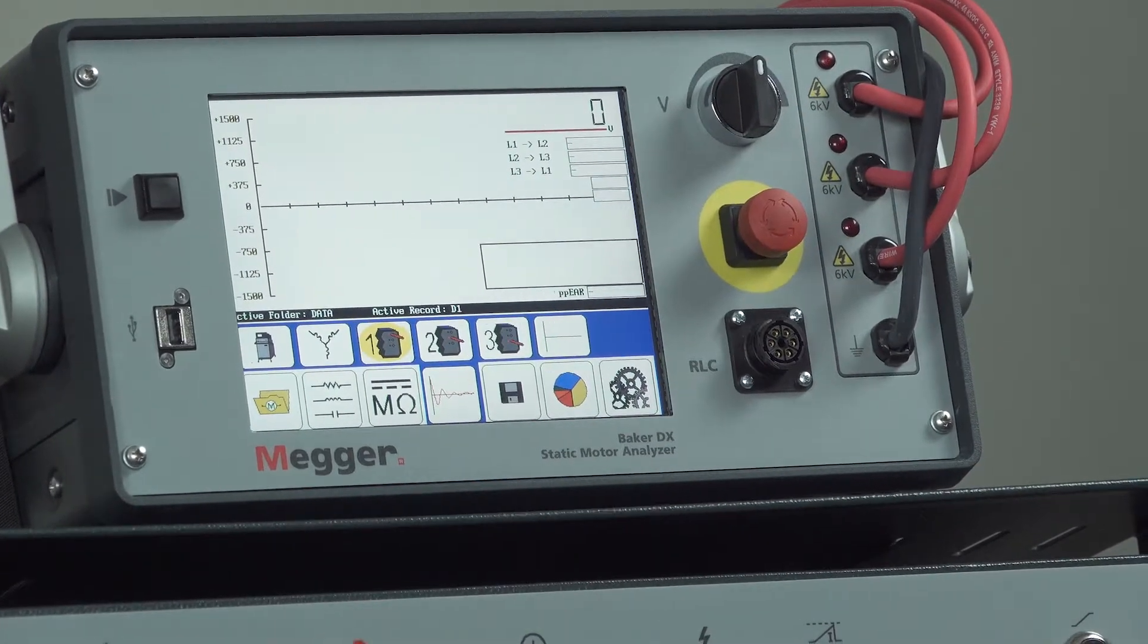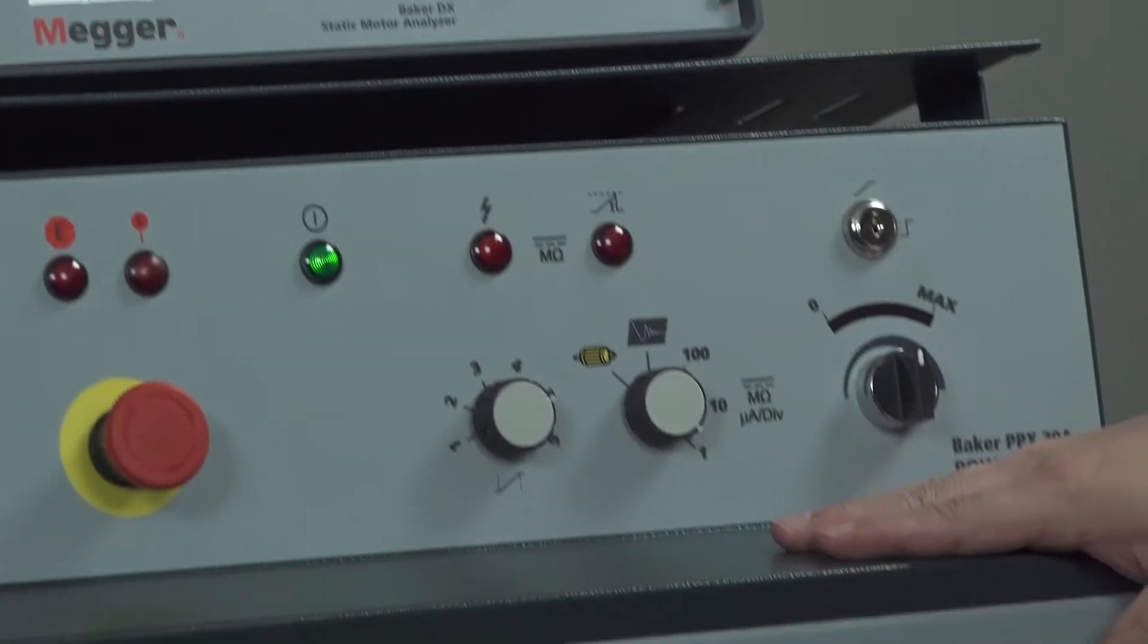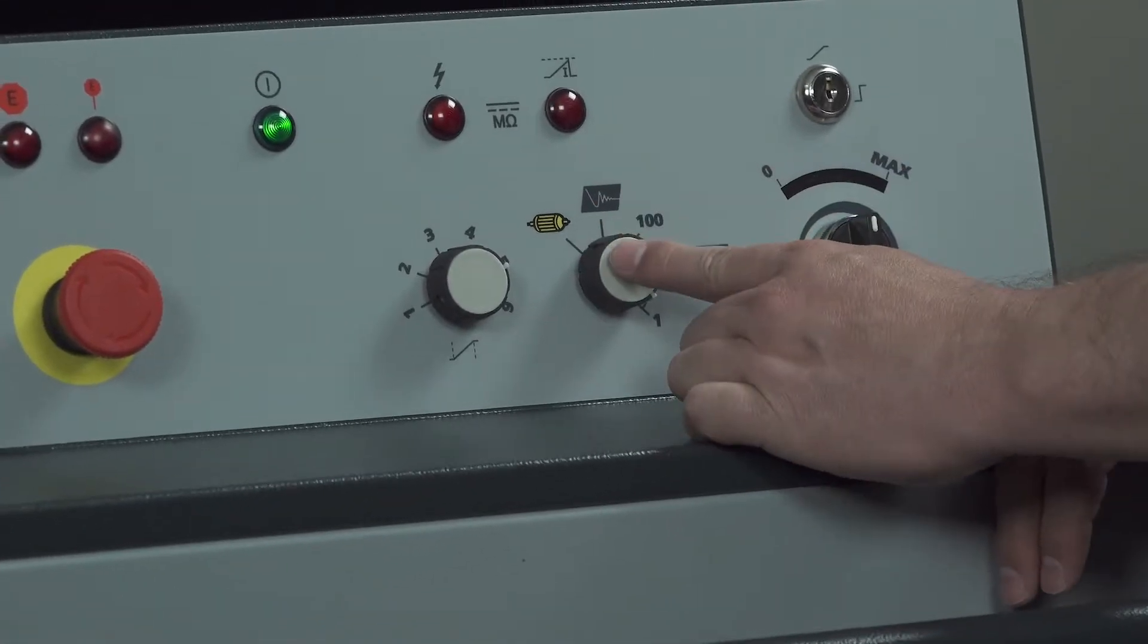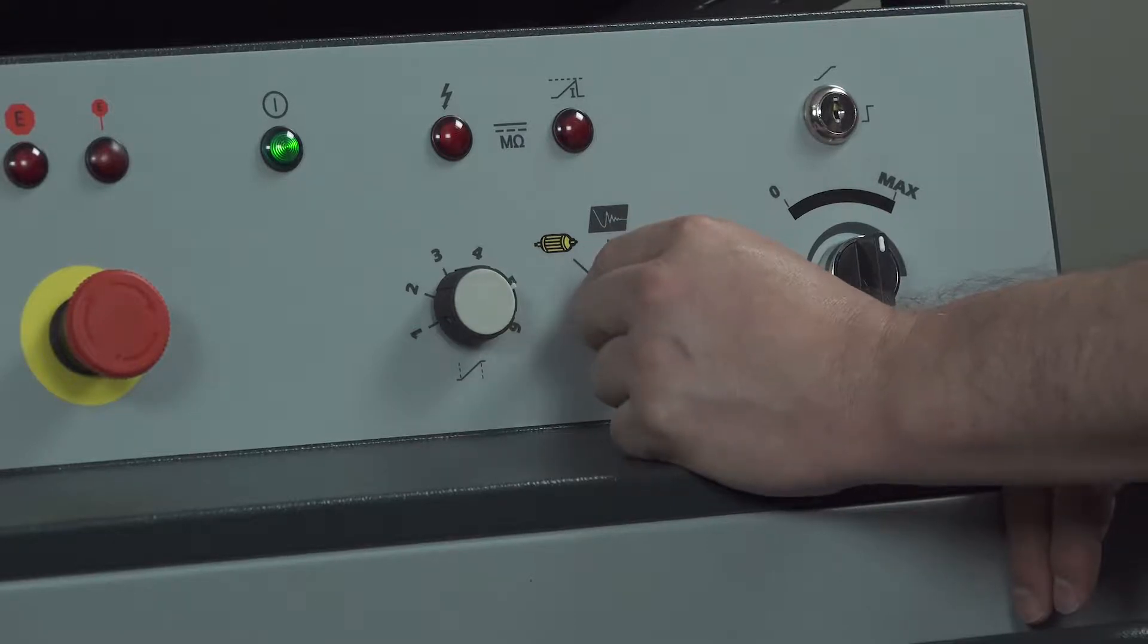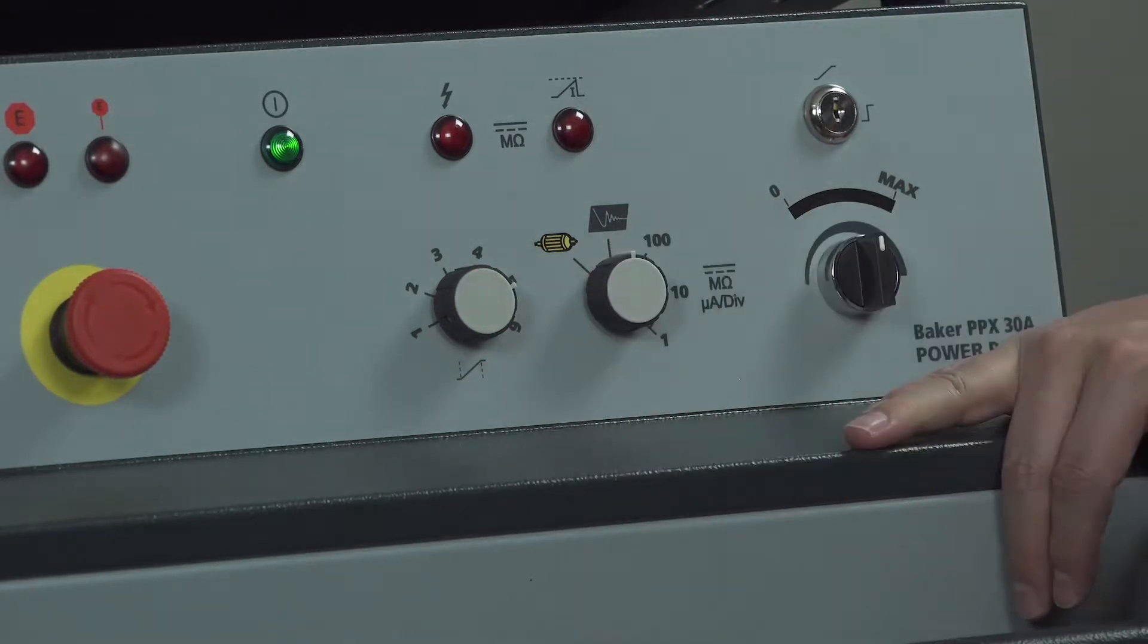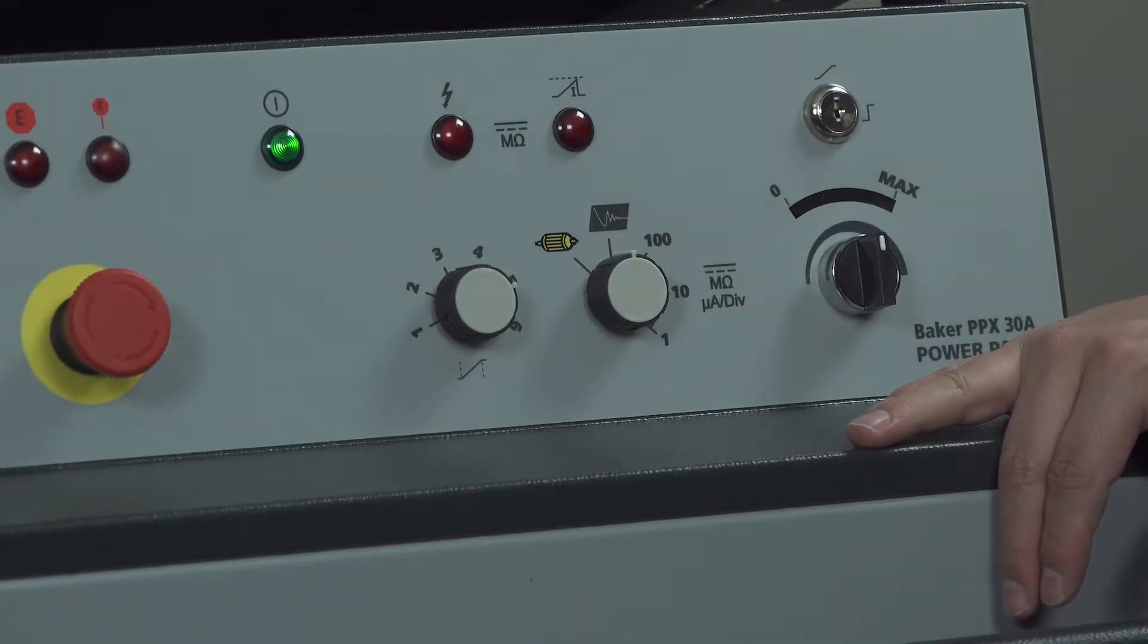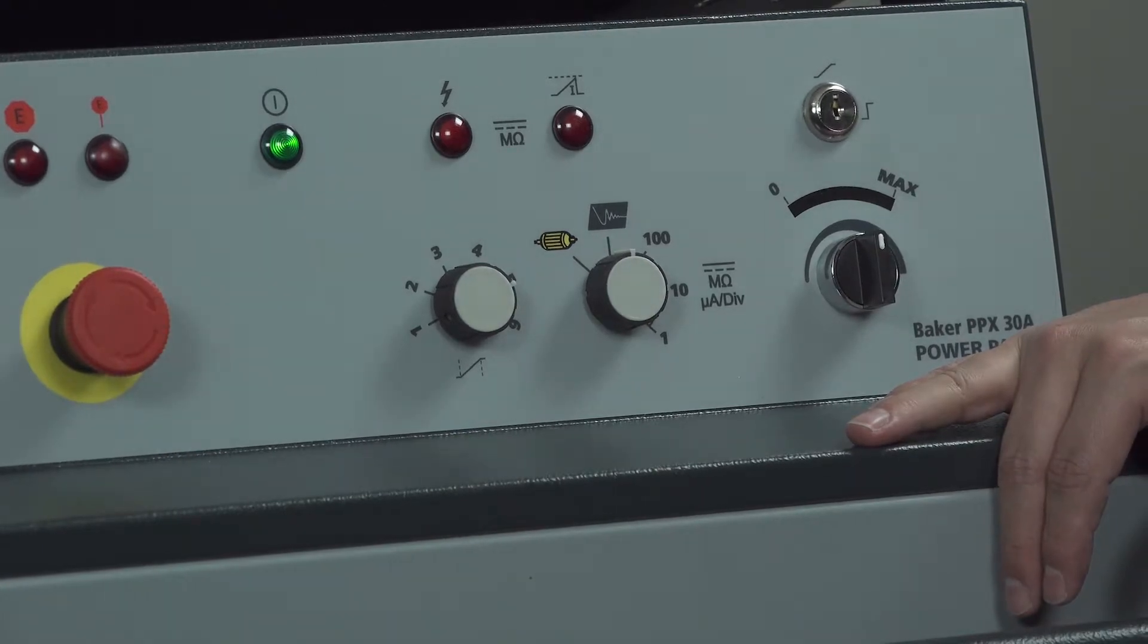Now we need to make sure we have the power pack configured properly. The first thing we want to do is select the function selector switch and take it to the surge position. You'll hear that relay pickup energizing the high voltage power supply.